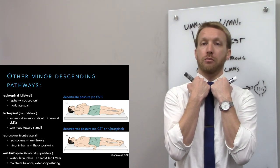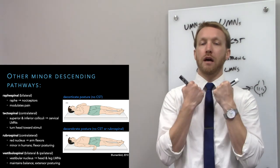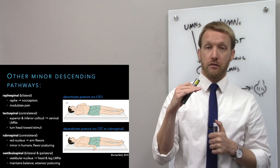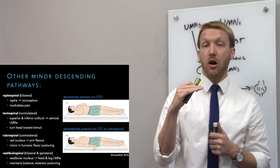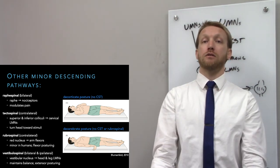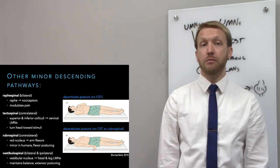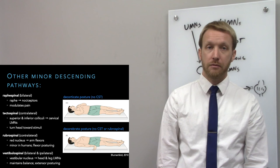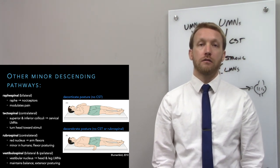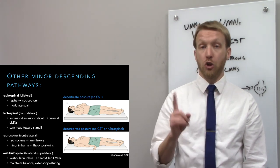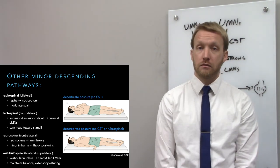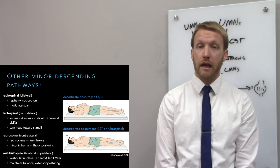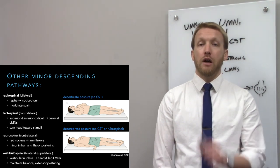The rubrospinal tract can be seen in action with loss of consciousness from severe brain damage above the midbrain — decorticate posturing. When we lose the corticospinal tract, the rubrospinal tract takes over and we get flexor posturing of the upper limbs. If damage occurs below the midbrain so that the rubrospinal tract is also lost, we get extensor posturing instead — decerebrate posturing — from the vestibulospinal tract. The vestibulospinal tract goes from the vestibular nuclei in the medulla down to lower motor neurons controlling the neck, upper limb, trunk, and lower limb, particularly to keep us upright.